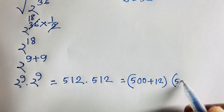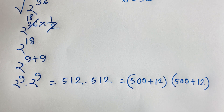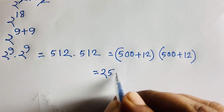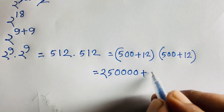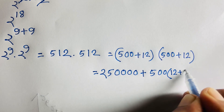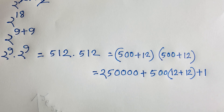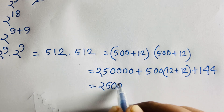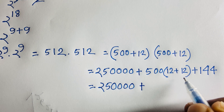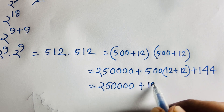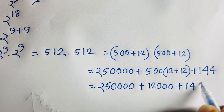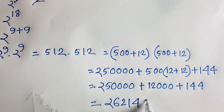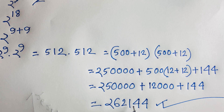To multiply 512 times 512, we write each as 500 plus 12. Expanding: 500 times 500 equals 250,000; 500 times 12 plus 12 times 500 equals 12,000; and 12 times 12 equals 144. Adding these together: 250,000 plus 12,000 plus 12,000 plus 144 equals 262,144. So our final answer is 262,144.